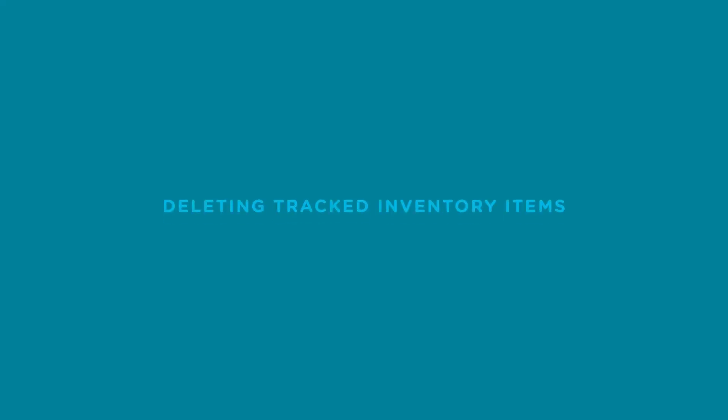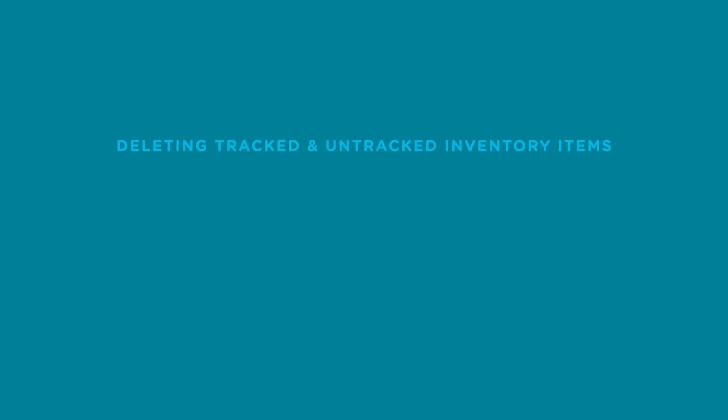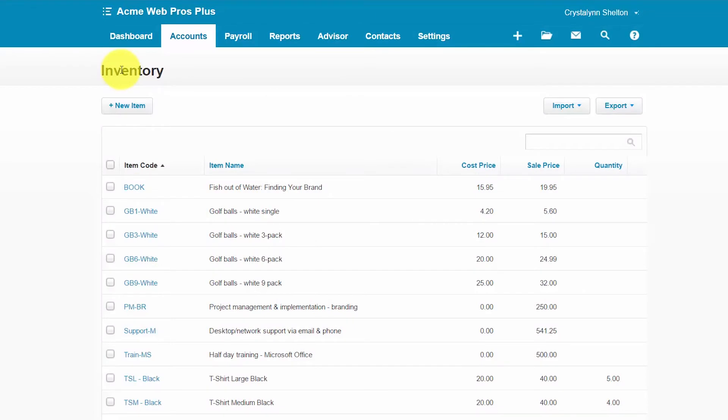You can't delete a tracked inventory item if it's been used in a spend money or receive money transaction — for example, paying for office lunch or receiving a rewards check from your credit card company. You can't delete a tracked inventory item that you've added an opening balance to, or that you've made an adjustment to. You also can't delete a tracked or untracked inventory item if it is used on a recurring invoice or bill. However, you can remove the item from the repeating invoice or bill first and then delete the item — step-by-step instructions are in the link below.